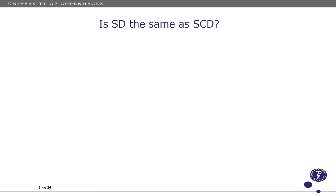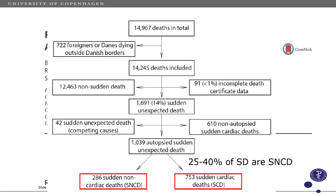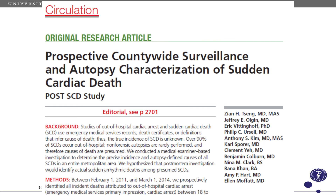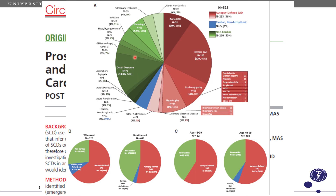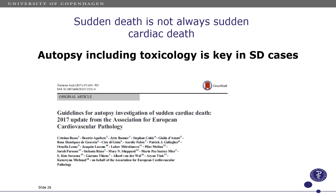Quite importantly, the question becomes: is sudden death the same as sudden cardiac death in the young? I'm going to quote two studies. In our own, we found that 25% of sudden deaths are non-cardiac — they could be hemorrhage or pulmonary embolism. A second study on the general population from San Francisco, a three-year study looking into cause of death, found quite interestingly and surprisingly that occult overdose is the leading cause of non-cardiac death. Therefore, sudden death is not always sudden cardiac death, and autopsy including toxicology is key in sudden death cases.